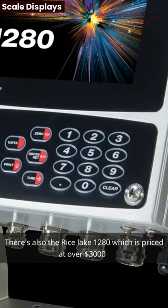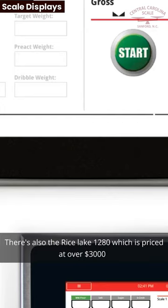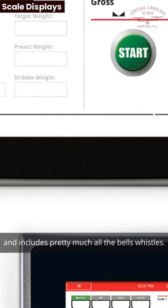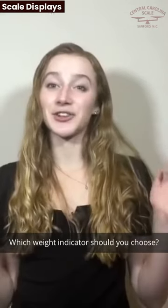There's the Rice Lake 1280, which is priced at over $3,000 and includes pretty much all the bells and whistles, so which weight indicator should you choose?